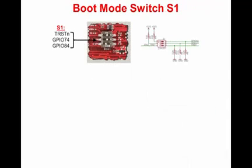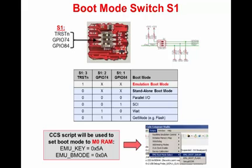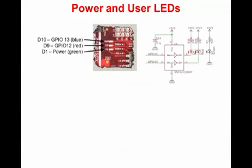Boot mode switch S1 contains three individual switches. Position S3 is connected to the JTAG TRST line. For emulation boot mode, that is, when communicating with the debugger, this switch must be set to one. The other switch settings are for stand-alone boot mode. In our demonstration, while in emulation boot mode, a CCS script will be used to set the boot mode to M0 RAM by populating EMU_key to 5A and EMU_BMODE to 0A. The three main LEDs are D1, which indicates the LaunchPad is powered on, and D9 and D10, which are connected to GPIO12 and GPIO13 respectively.